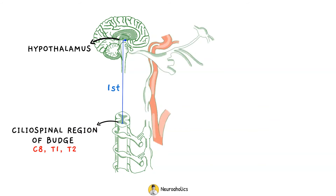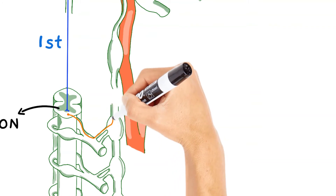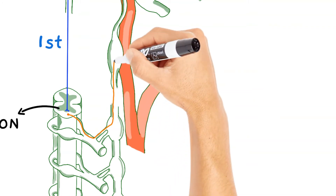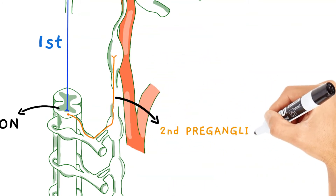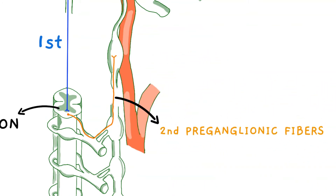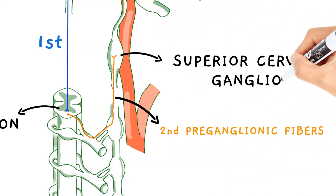The second-order neuron originates in the ciliospinal center of Budge. These are the preganglionic fibers, and they go through the inferior and middle cervical ganglions to synapse in the superior cervical ganglion.